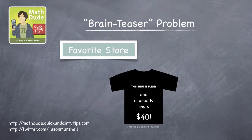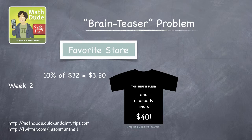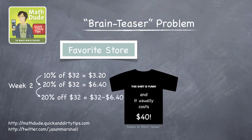The next week, they start offering an additional 20% discount off this new price. So 10% of $32 is $3.20. 20% of $32 is therefore twice this, or $6.40. And the new sale price is therefore $32 minus $6.40, which is $25.60.